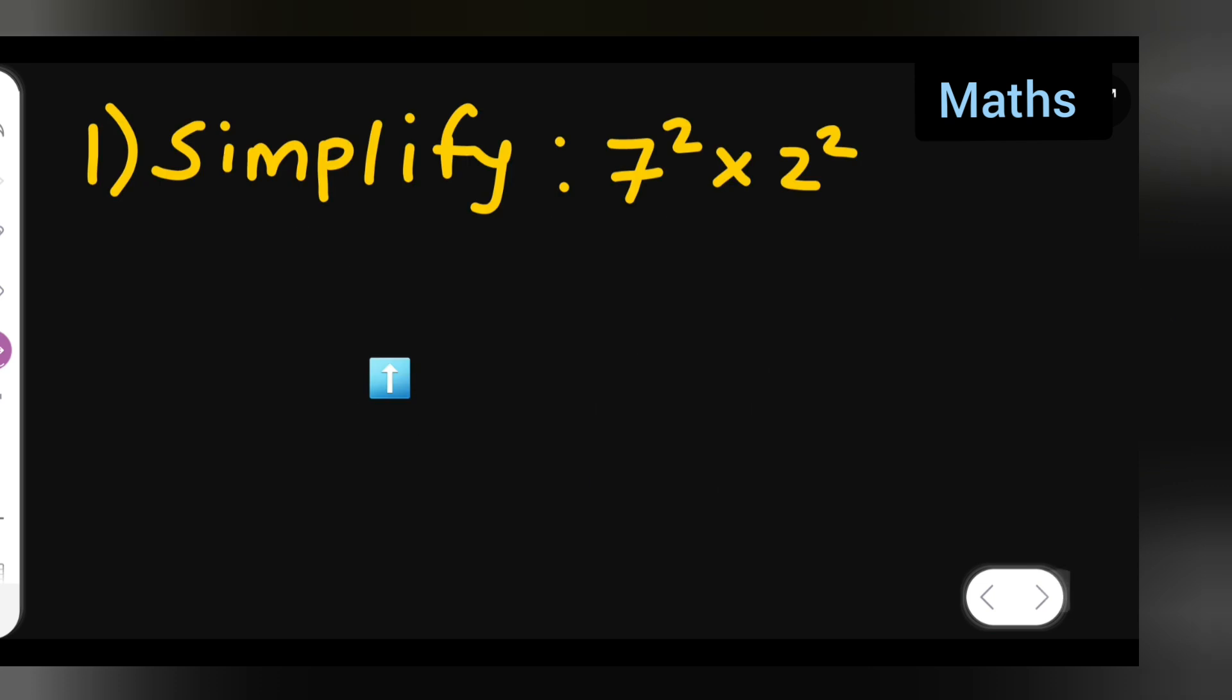Simplify 7 square into 2 square. Let us see how to simplify this. Let us write this in step by step order. First, write down 7 square multiplied by 2 square.